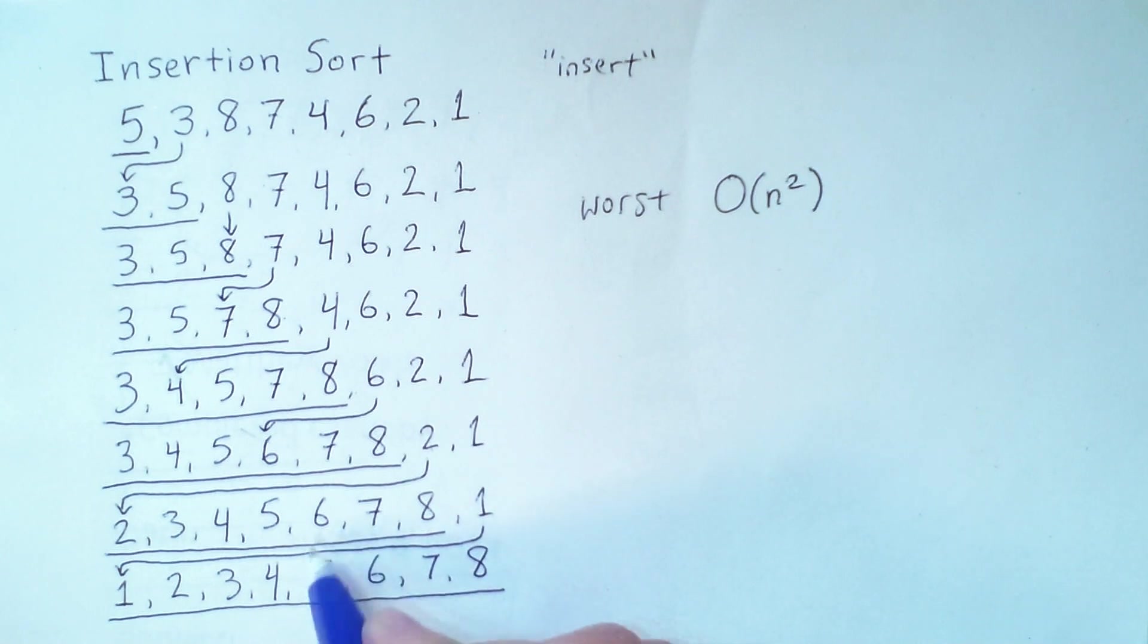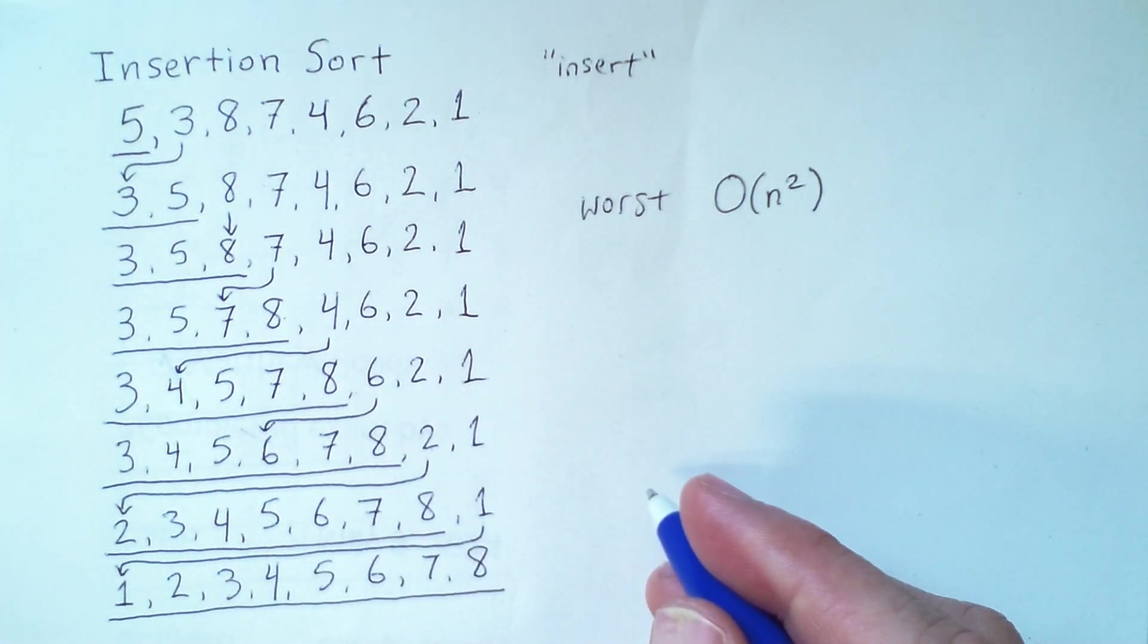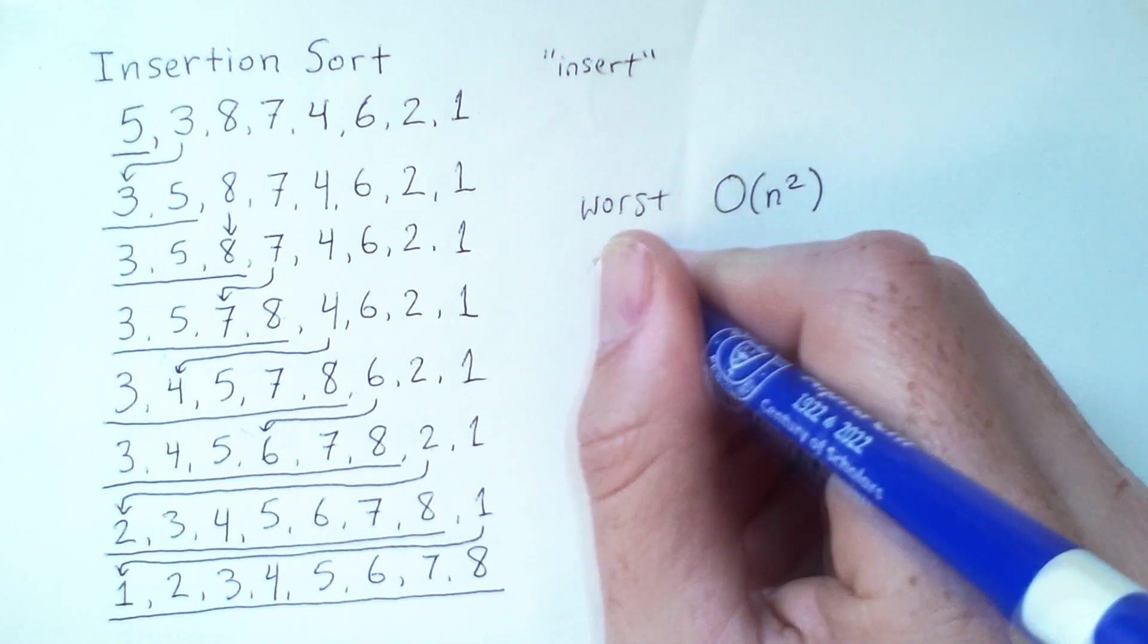Here, the 1 moved 1, 2, 3, 4, 5, 6, 7 positions. And if the whole array were in reverse order, then we would be moving elements back the maximum number of positions every time. And I can quickly show that with a small example here.